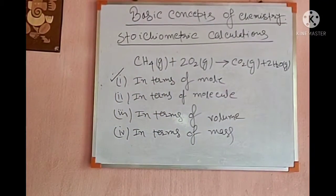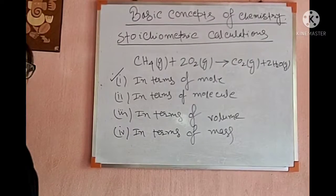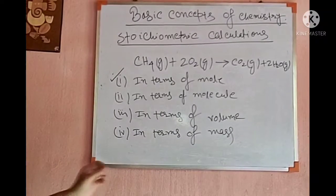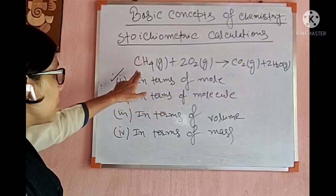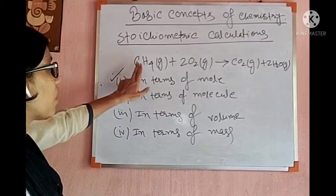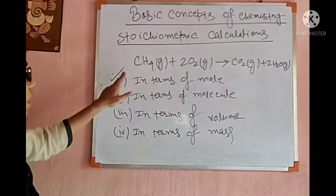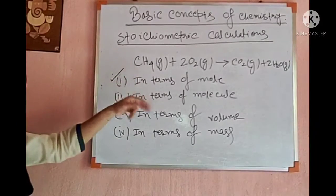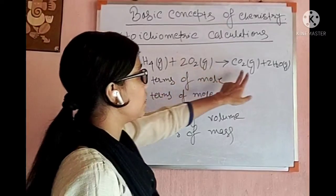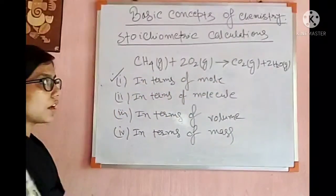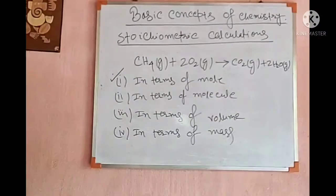For the second type, just replace the term mole with molecule. So 1 molecule of methane reacts with 2 molecules of oxygen giving 1 molecule of carbon dioxide and 2 molecules of water. This is the second type.